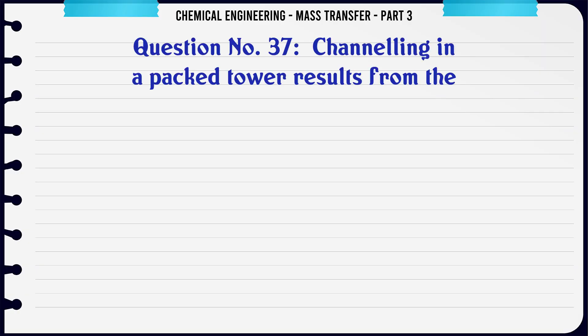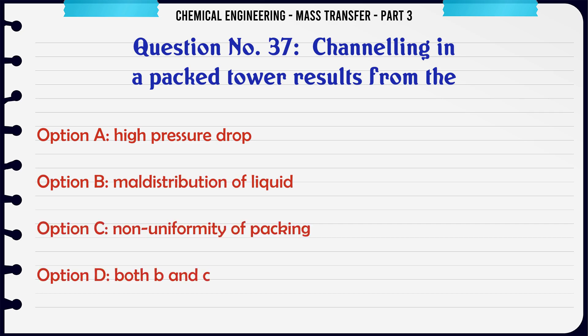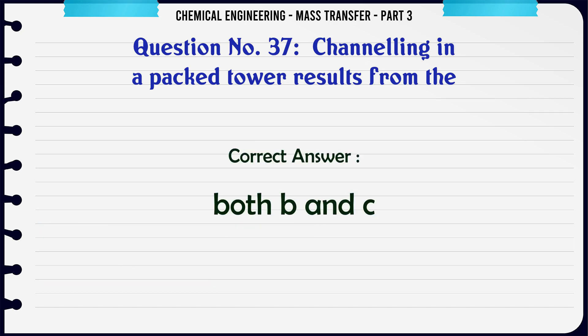Channeling in a packed tower results from: A) high pressure drop, B) maldistribution of liquid, C) non-uniformity of packing, D) both B and C. The correct answer is: both B and C.